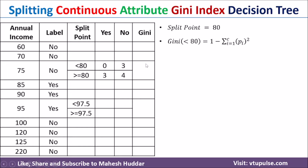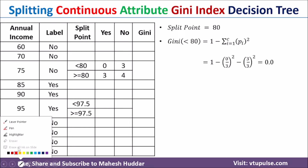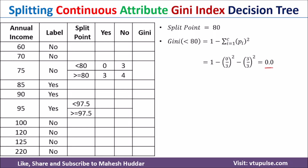To find the Gini index, we first compute Gini of less than 80, then Gini of greater than or equal to 80, and then combine them. Gini of less than 80 equals 1 minus the sum of pi-squared for each class. The probability of 'yes' is 0/3 and the probability of 'no' is 3/3, giving a Gini of 0 for less than 80.